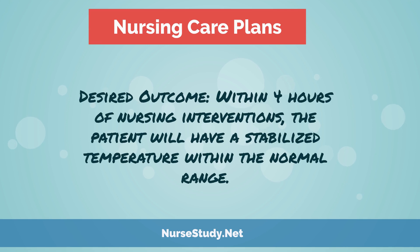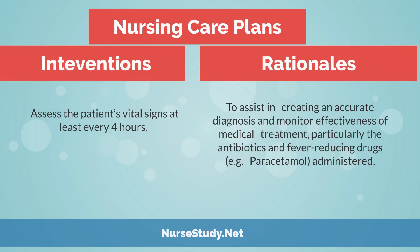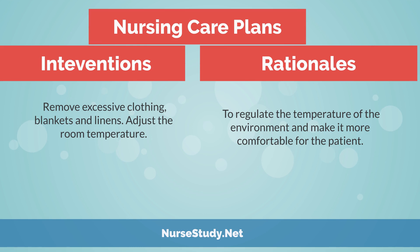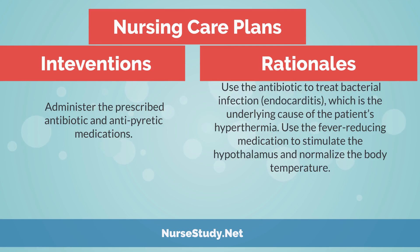Desired outcome: within 4 hours of nursing interventions, the patient will have a stabilized temperature within the normal range. Intervention: assess the patient's vital signs at least every 4 hours. Rationale: to assist in creating an accurate diagnosis and monitor effectiveness of medical treatment, particularly the antibiotics and fever-reducing drugs administered. Intervention: remove excessive clothing, blankets, and linens; adjust the room temperature. Rationale: to regulate the temperature of the environment and make it more comfortable for the patient.